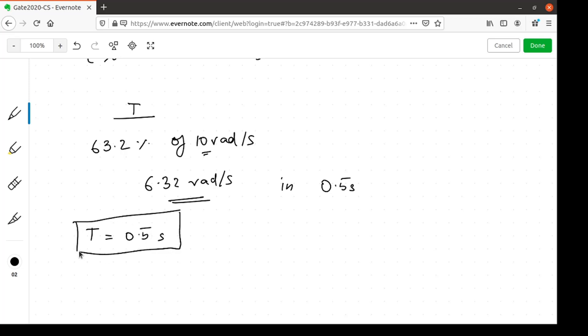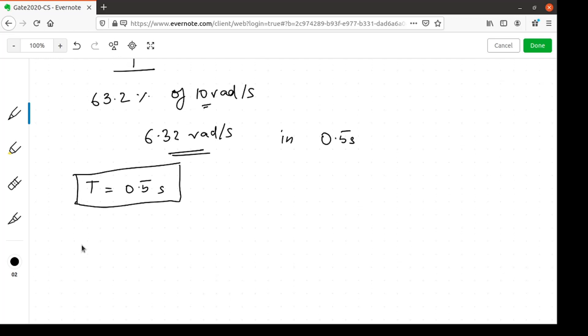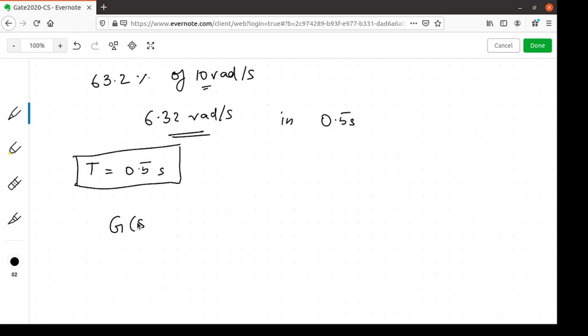Now, we will substitute this back. We will get g of s equals omega of s by v of s equals k by 1 plus st. We will substitute the value of k which was 2 and the value of t which was 0.5, so it is 2 by 1 plus 0.5 s.